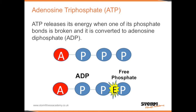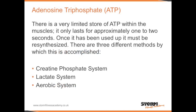ATP releases its energy when one of its phosphate bonds is broken, and it is converted to adenosine diphosphate. There is a very limited store of ATP within the muscles — it only lasts for approximately 1 to 2 seconds. Once it has been used up it must be resynthesised, and there are three different methods by which this is accomplished.